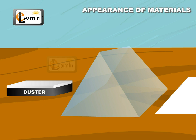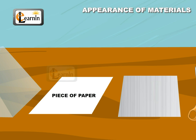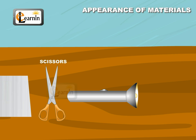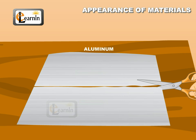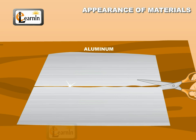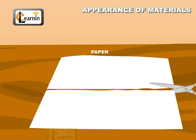Take a duster, a glass prism, a piece of paper, an aluminium sheet, a pair of scissors and a torch. Cut the paper and the aluminium sheet. You will notice that the aluminium sheet will appear shiny when it's cut. On the contrary, the paper wouldn't shine.